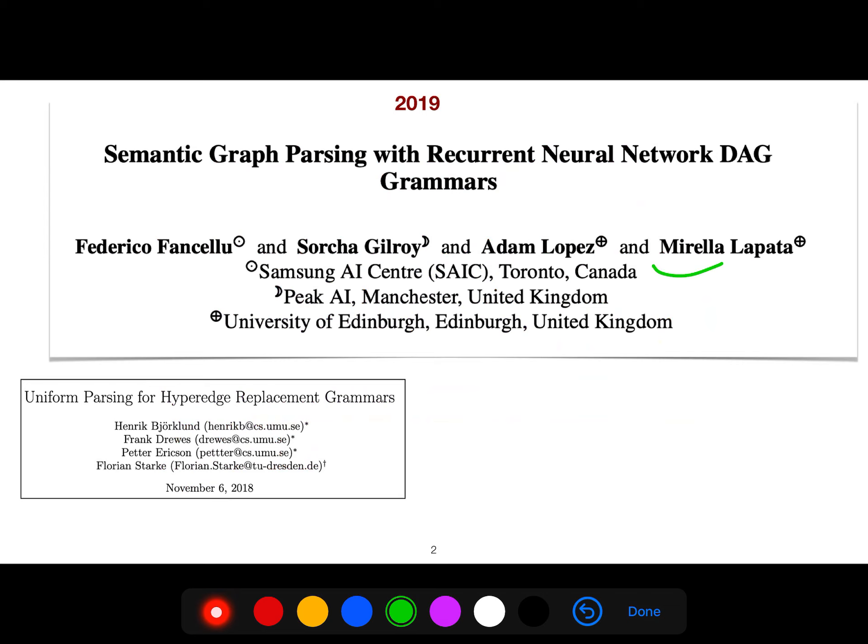Because in discourse representation structure, sometimes you have a graph that is a tree, but it is an acyclic tree. There is no cycle in that. They use recurrent neural network grammars.